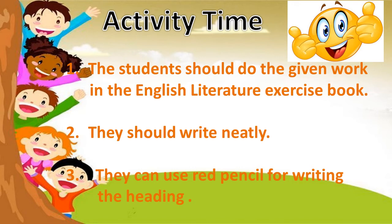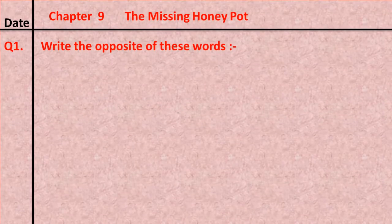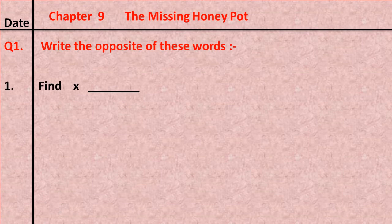Activity time! Children, you will do this work in your English Literature exercise book. Write neatly. Write the date and write the heading. Chapter 9: The Missing Honey Pot. Question one: Write the opposite of these words.